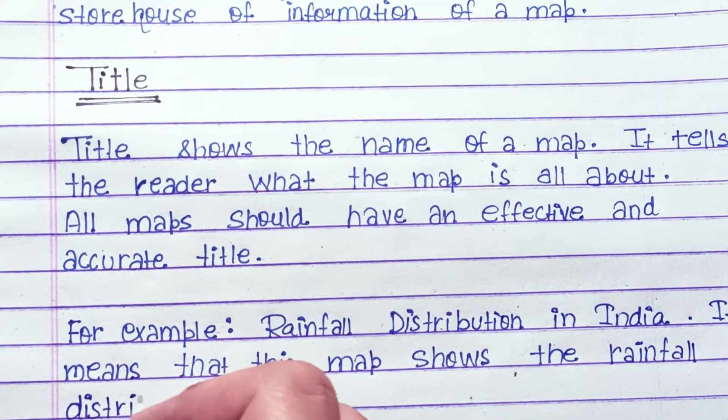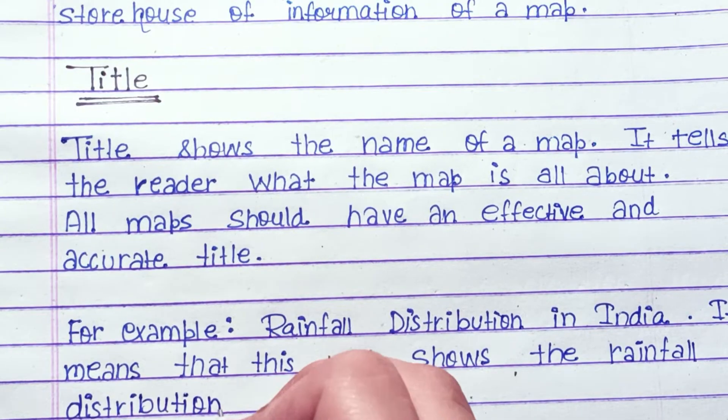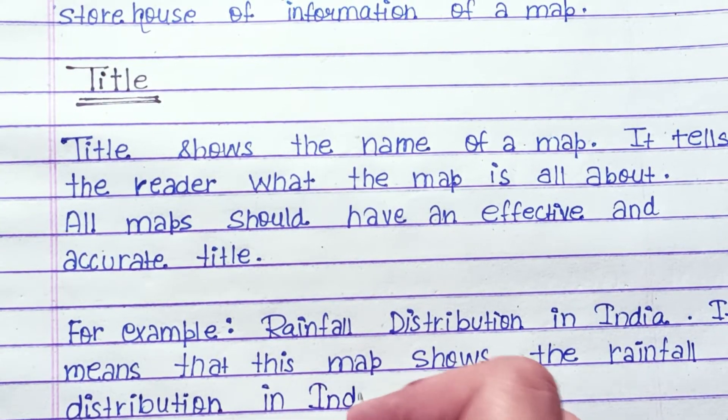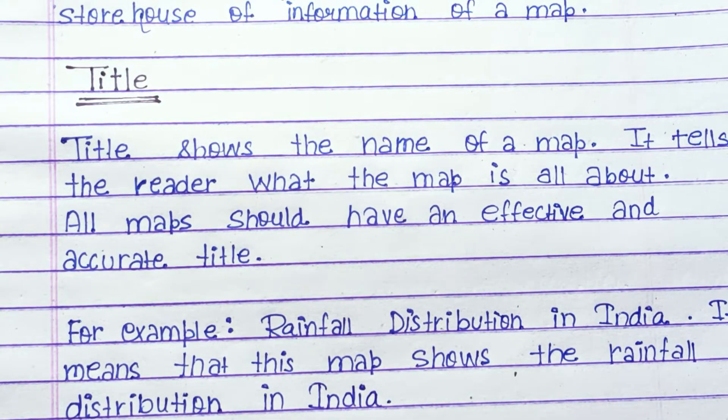For example, rainfall distribution in India. It means that this map shows the rainfall distribution in India.